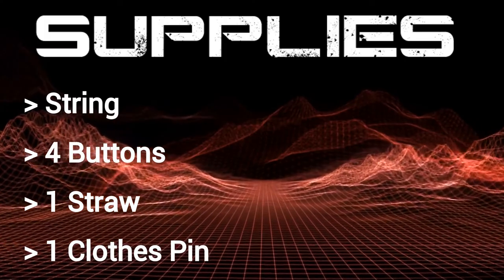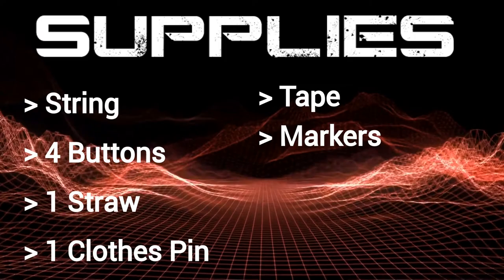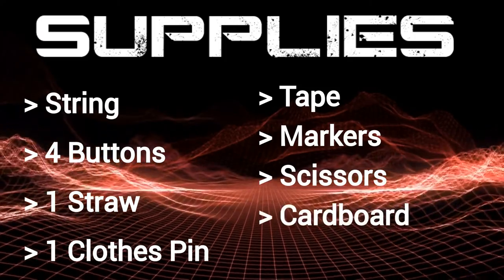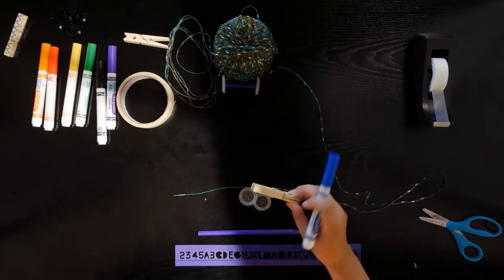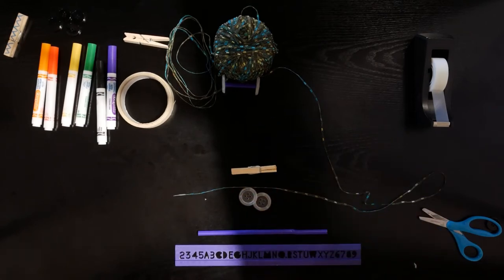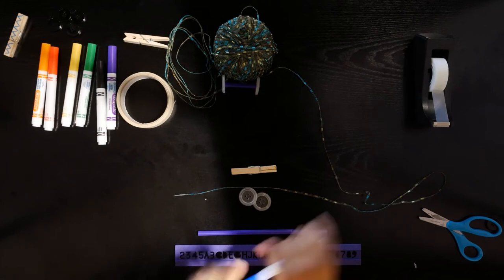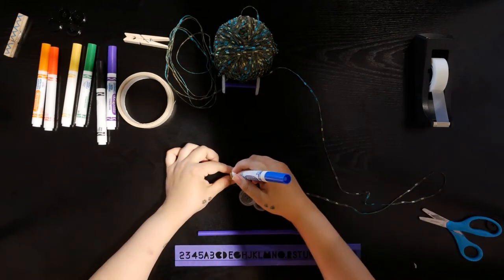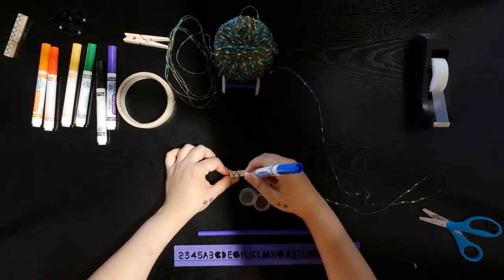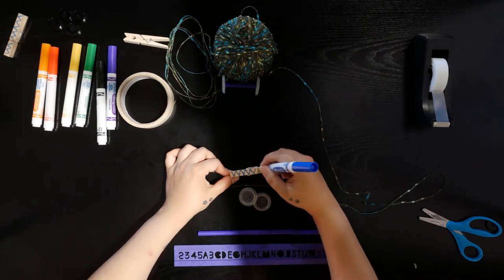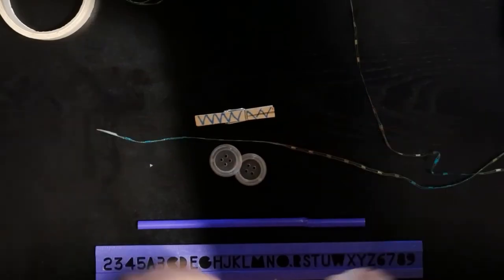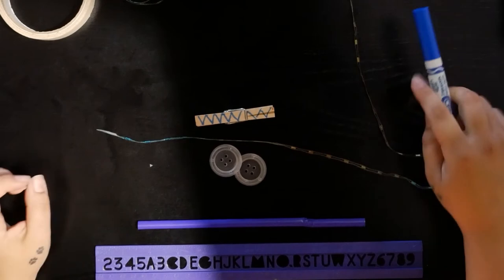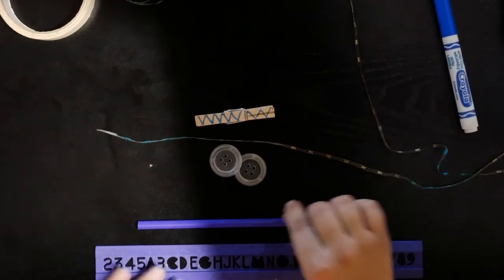The supplies you are going to need are string, four buttons, a straw, clothespin, tape, markers, scissors, cardboard, and a ruler. You're going to start by decorating the body of your race car, which is going to be this clothespin. I'm going to use blue because that's one of my favorite colors. You guys can use however many colors you want and be as creative as you want.